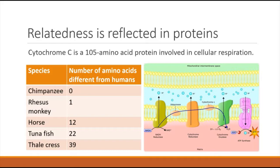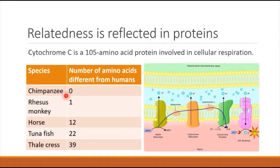Another example of molecular biology evidence is the protein cytochrome C — a 105-amino-acid protein found in the process of cellular respiration. Because virtually all organisms perform cellular respiration, cytochrome C is found in all organisms, and you can compare its structure across species to gauge their relatedness. Comparing the human version to a chimpanzee: zero amino acids are different — they are completely identical. Compared to a rhesus monkey: one amino acid is different. Compared to a horse: 12 are different. Compared to a tuna fish: 22 are different. And compared to thale cress (a type of plant): 39 are different. As you get farther away in relatedness, the level of similarity also becomes more distant.